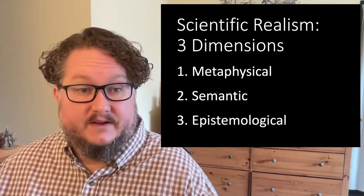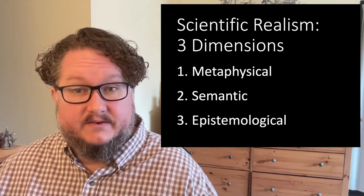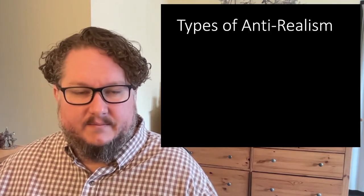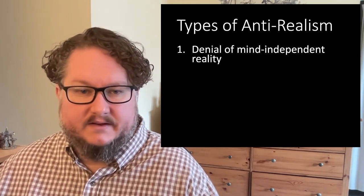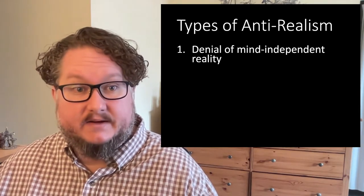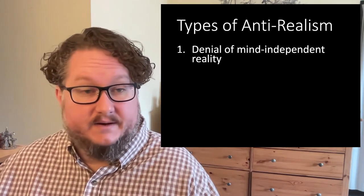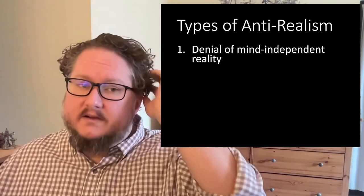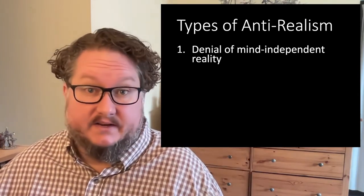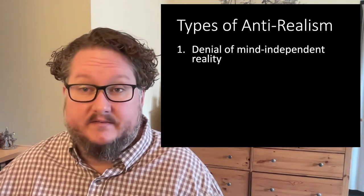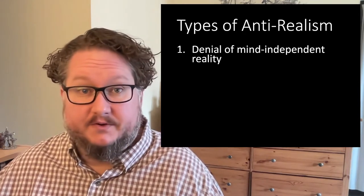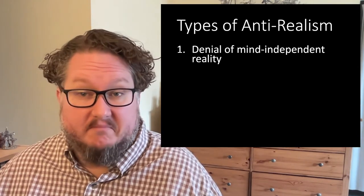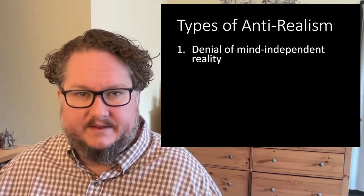The denial of any one of these dimensions gives us a type of anti-realism. The denial of the metaphysical commitment of realism is a denial of a mind-independent reality. One way of denying that is to be a certain kind of idealist — you might say the only thing that exists is the mind, or everything that exists is dependent on the mind or on some kind of pre-existing mental or conceptual structure. Various kinds of idealism are scientific anti-realisms in this sense.